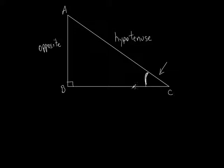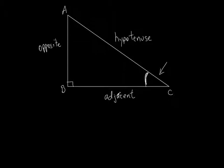What about side BC? It's next to angle C — it's adjacent. 'Adjacent' is not a word teenagers walk around saying, but it is a word that means 'next to.' Like if I had a house and lived next to my neighbor, I'd say we live adjacent to each other. We've actually used this word in geometry earlier in the year — adjacent angles.